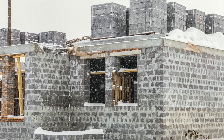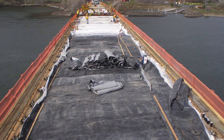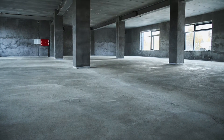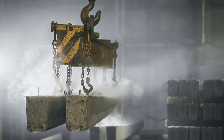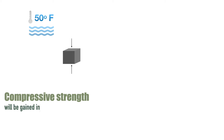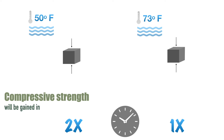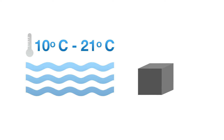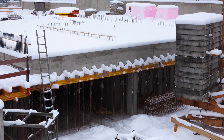Curing in cold weather is different, as the biggest concern is maintaining an adequate and conducive temperature for hydration. For massive members, the heat generated by concrete during hydration will be adequate to provide a satisfactory curing temperature. For non-massive members, a good alternative is steam curing, which provides both moisture and heat. Compressive strength of concrete cured and maintained at 50 degrees Fahrenheit is expected to gain strength half as quickly as concrete cured at 73 degrees Fahrenheit. A minimum favorable temperature in the range of 10 to 21 degrees Celsius must be maintained for the minimum required curing period. The curing period for cold weather concrete is longer than the standard period due to the reduced rate of strength gain.